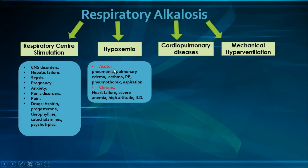Hypoxemia can be further categorized into acute and chronic causes. The acute causes are primarily pulmonary, such as pneumonia, pulmonary edema, asthma, pulmonary embolism, pneumothorax, and foreign body aspiration, all of which impair gas exchange and therefore cause hypoxemia. For the chronic causes, we have heart failure, severe anemia, high altitude, and interstitial lung disease, all of which also impair gas exchange and therefore cause hypoxemia. Hypoxemia causes hyperventilation through stimulation of the peripheral chemoreceptors in the carotid bodies.